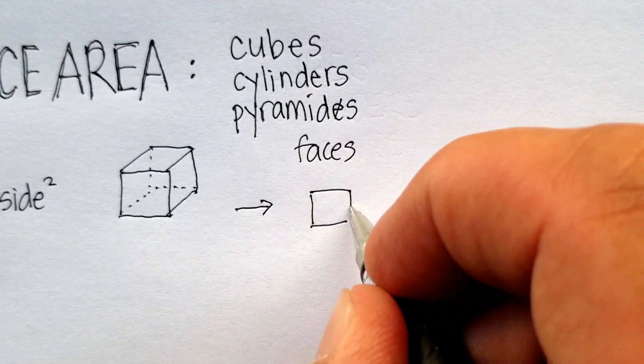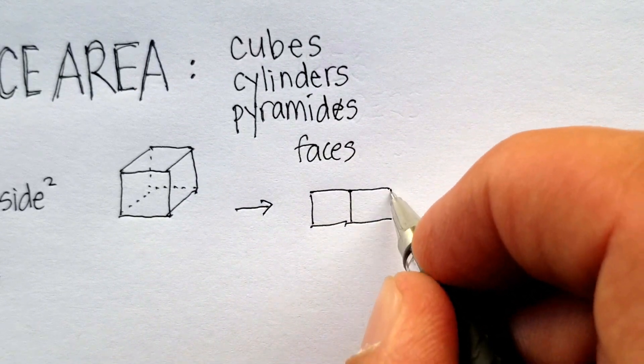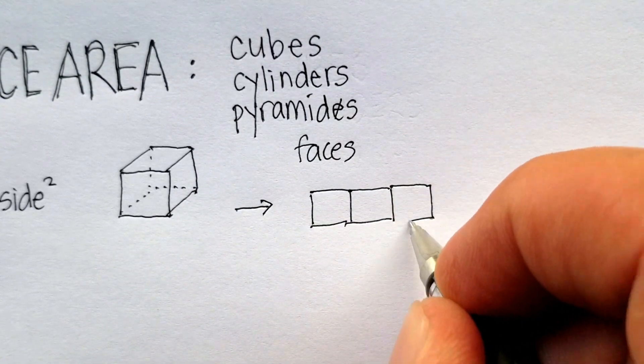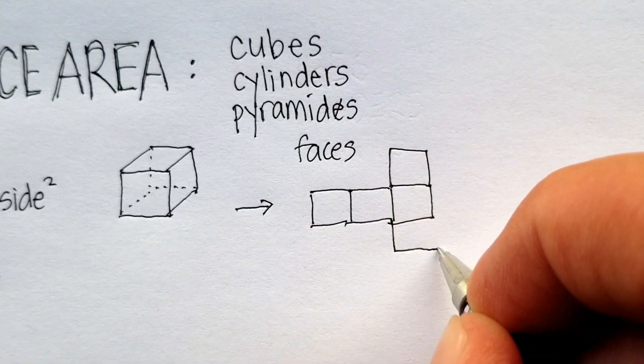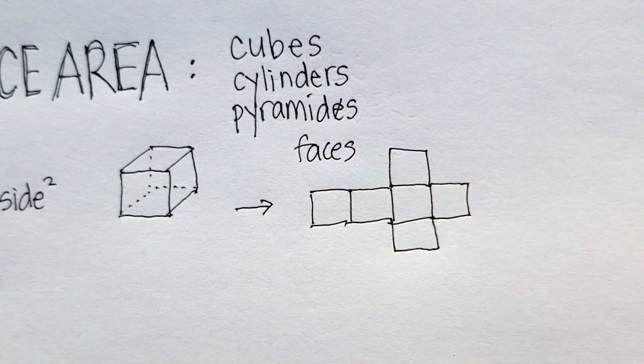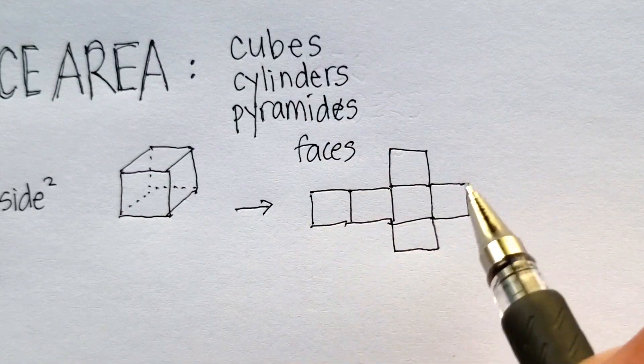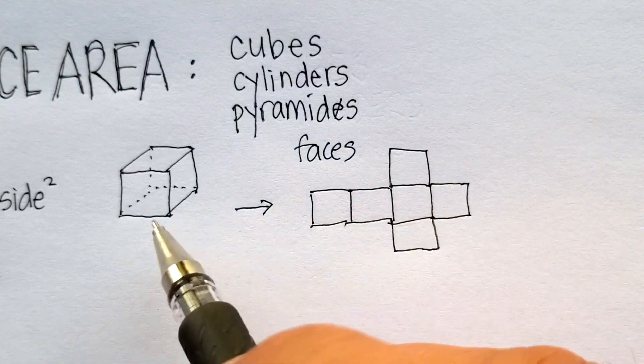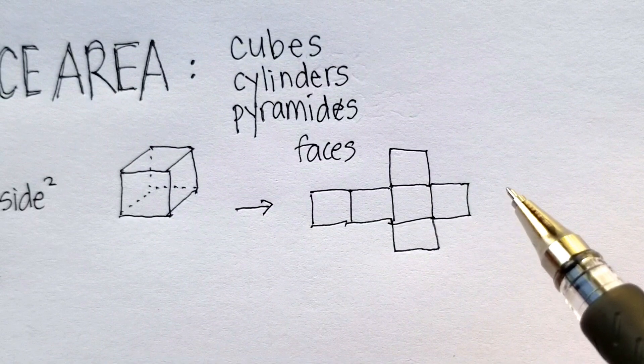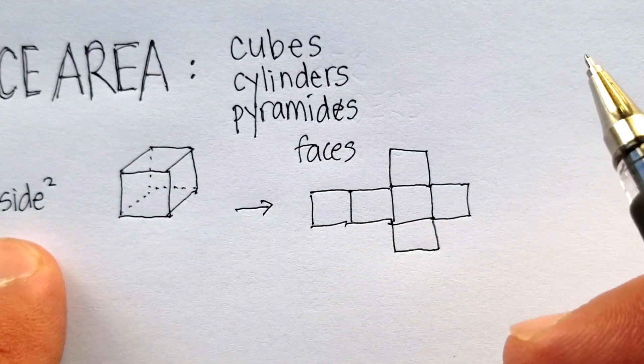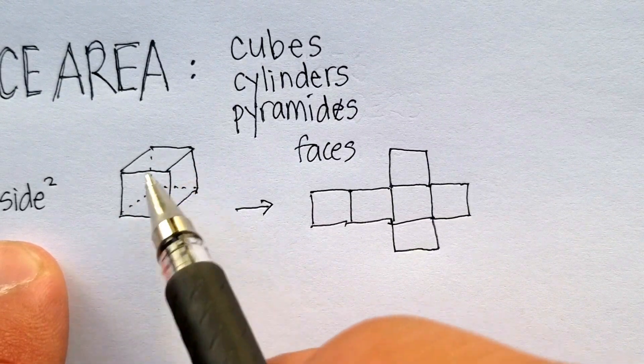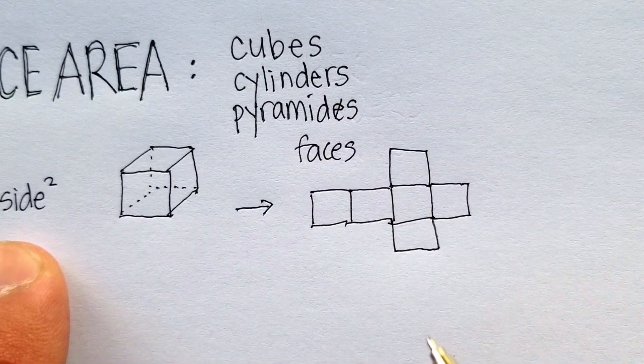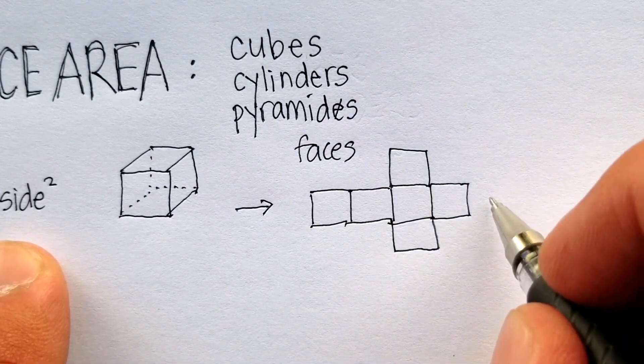There'd be a square there, a square there, a square there, one here, one here, and one here. You would fold it up, fold these sides up, and then you would get this figure.